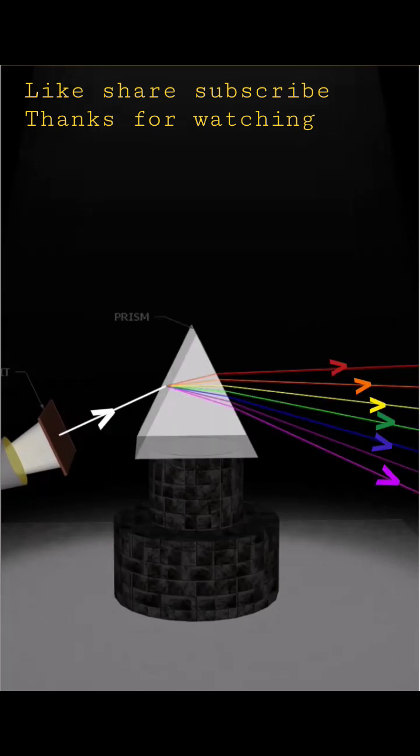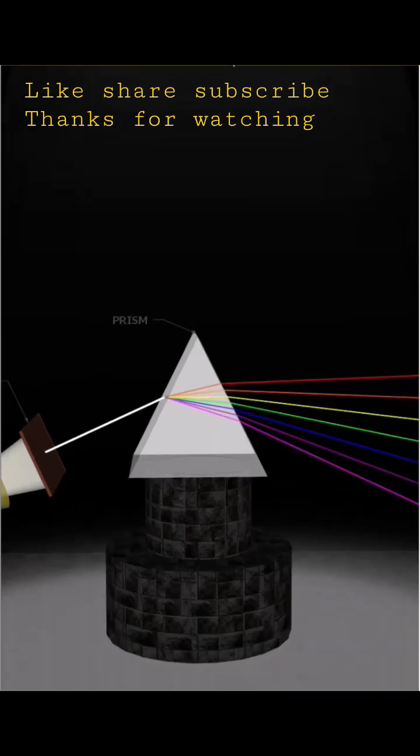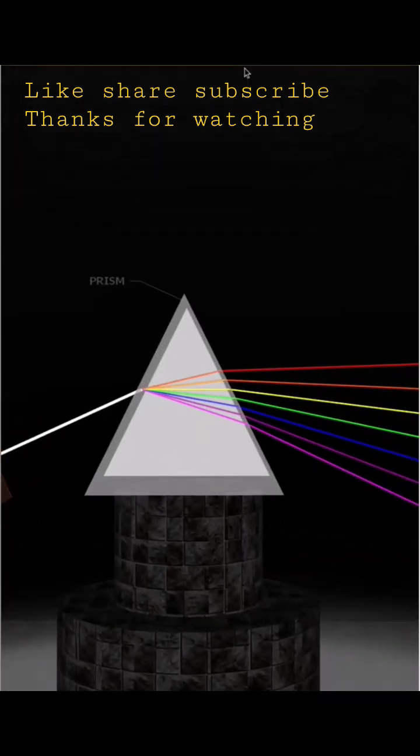When a white ray of light enters into the prism, it deviates and divides into seven colors.